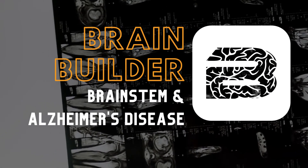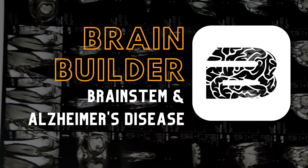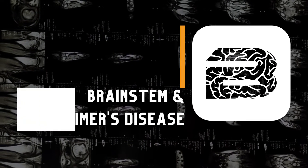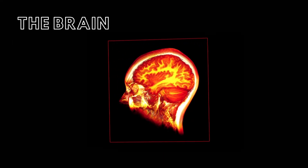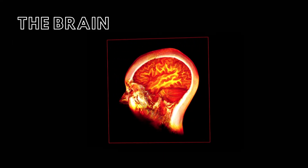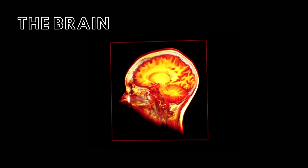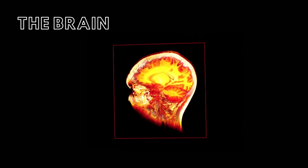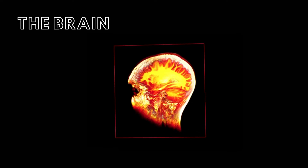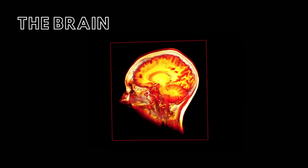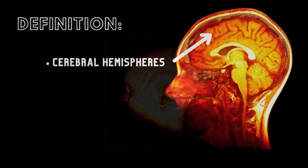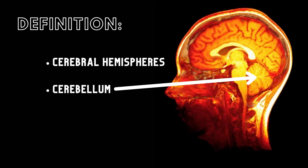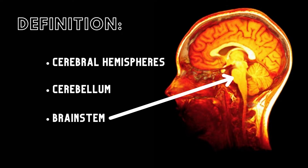Today, we are going to look at a BodyViz Brain Builder about the brainstem and Alzheimer's. Often compared to a computer, the brain is capable of conducting many times more simultaneous functions than any computer constructed so far. The brain is composed of three basic subdivisions: the cerebral hemispheres, the cerebellum, and the brainstem.